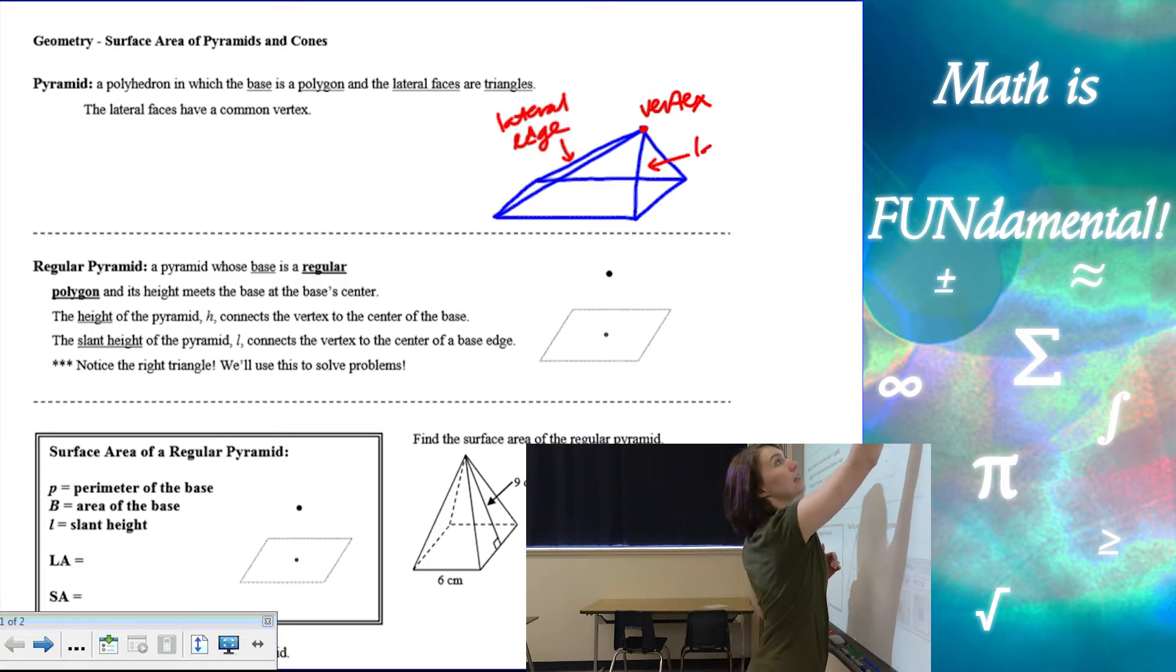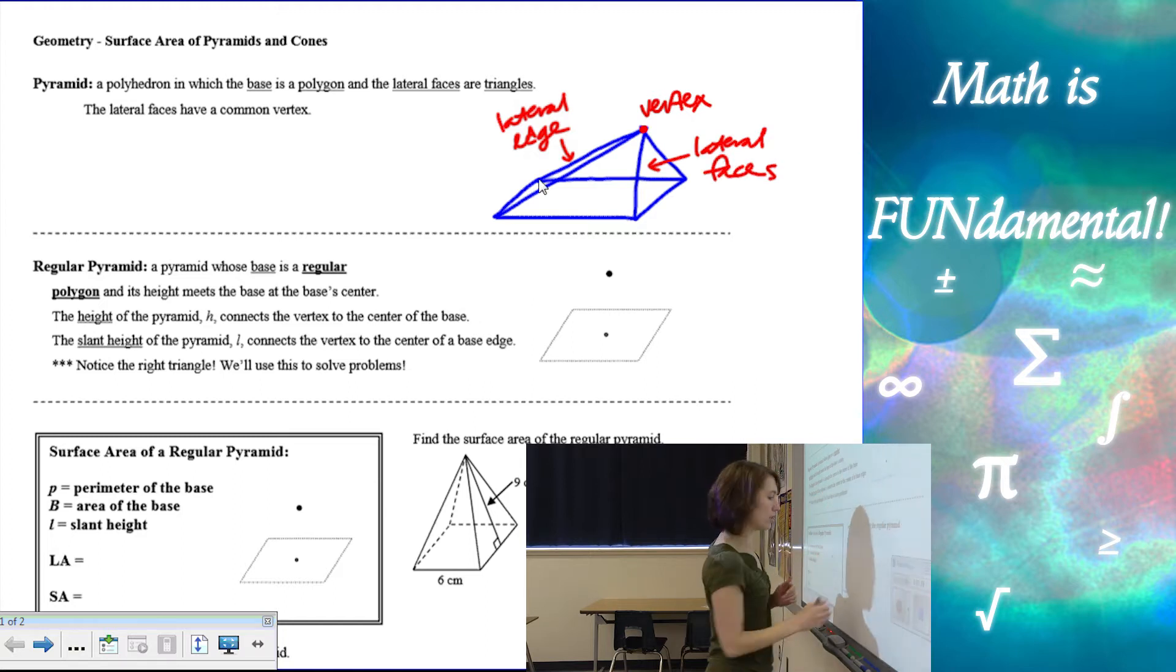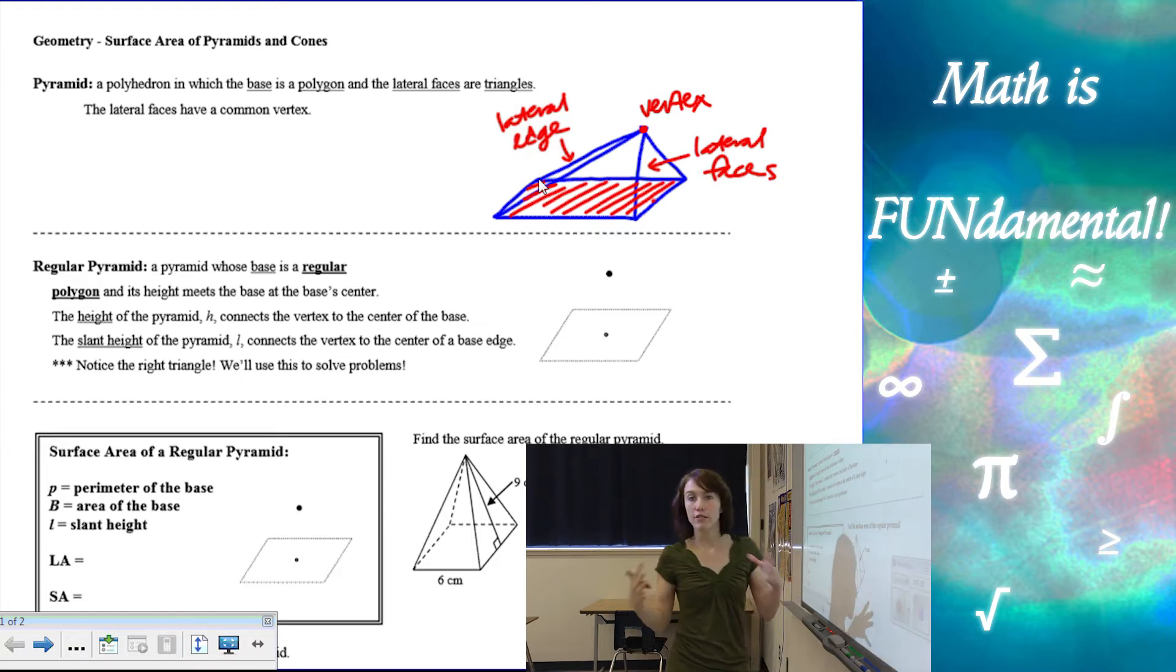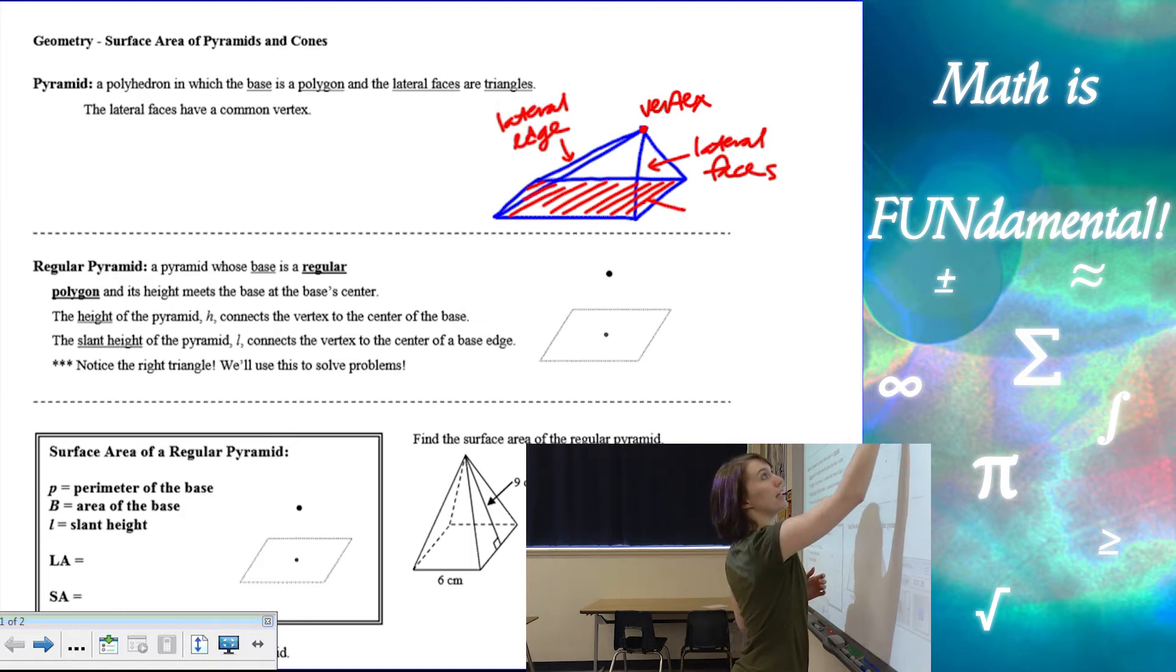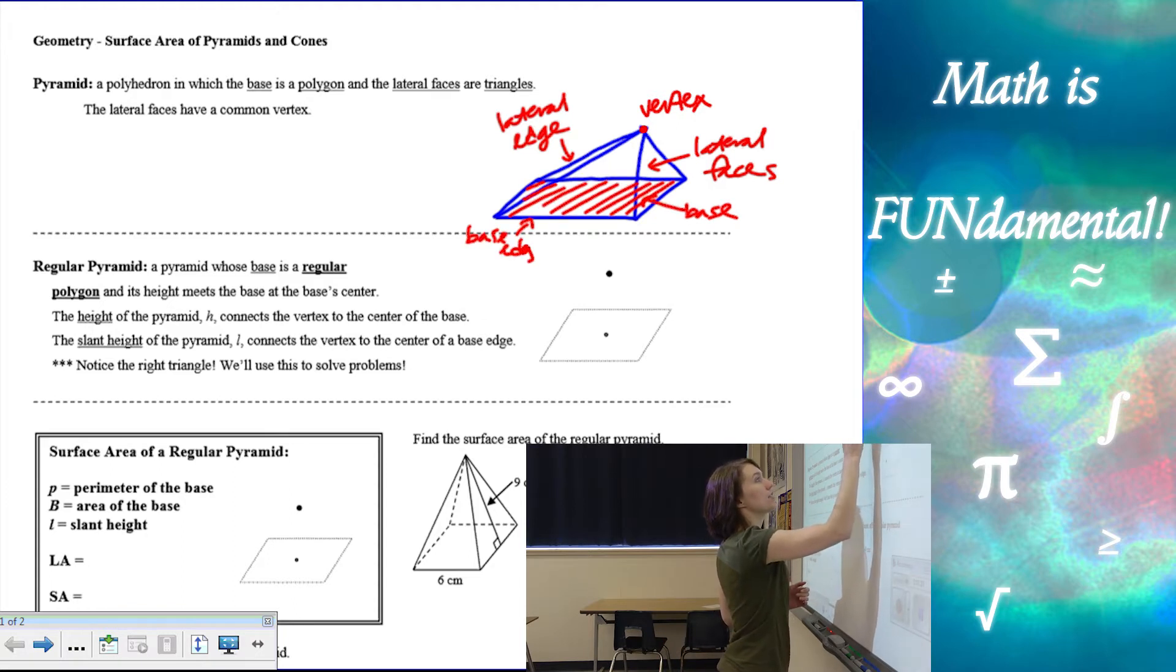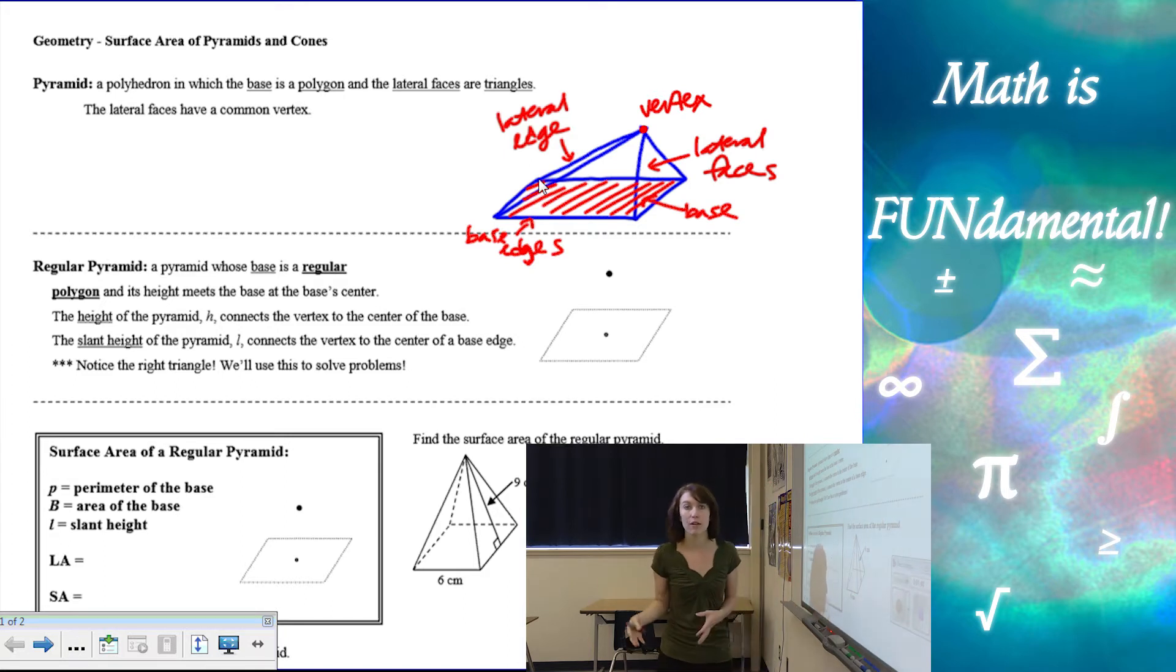Our lateral face is going to be one of our triangles. Our base is the non-triangular piece, so where all the triangles are coming from. So that here is going to be our base. And this would be one of our base edges. So just like in the last video we did with prisms, we had lateral edges and base edges. We have the same kind of thing going here, but only one base this time.